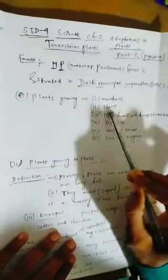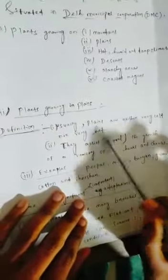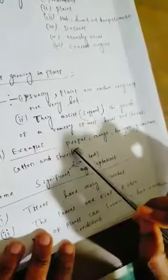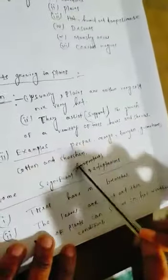Today we cover P — plants growing in plains. Plains definition: plains are neither very cold nor very hot. They assist, meaning they support, the growth of a variety of trees, herbs and shrubs. Examples of plants growing in plains include peepal, mango, banyan, gulmohar, cotton, and sisham.